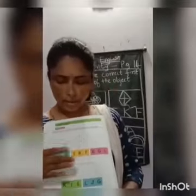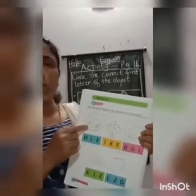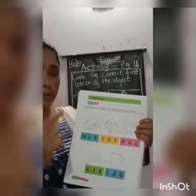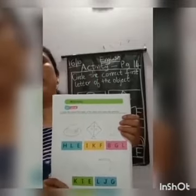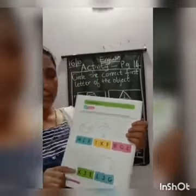This is page number 14. We have to circle the correct alphabet — look at the picture and circle the correct alphabet. Along with that, we also have to color the picture. I have drawn 4 pictures: hat, kite, leaf, and igloo.